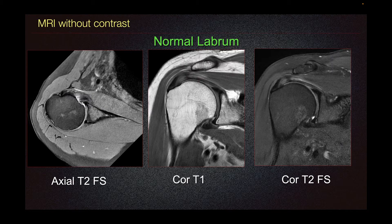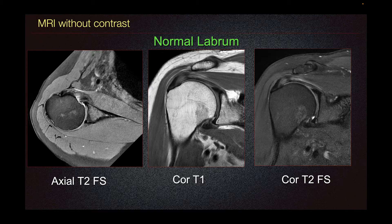If there is concern for a torn labrum or paralabral cyst, MRI without contrast could be performed. On this MRI without contrast, we evaluate for the normal labrum. A normal labrum is hypo-intense or dark on all sequences.